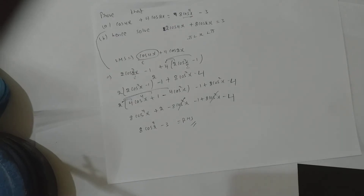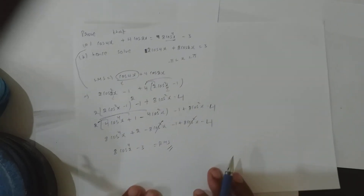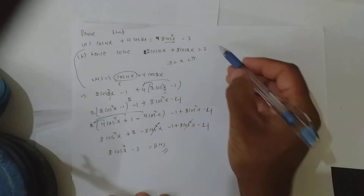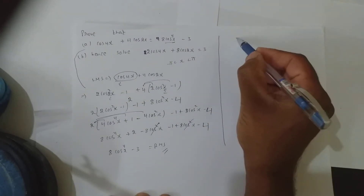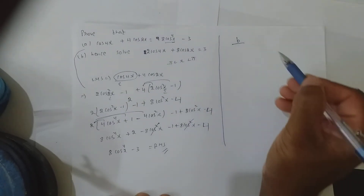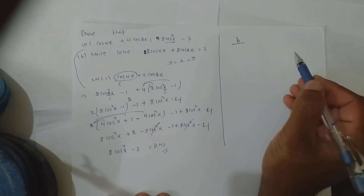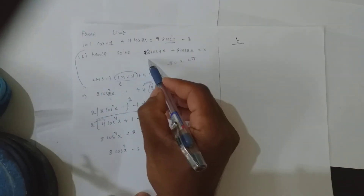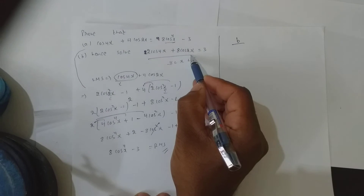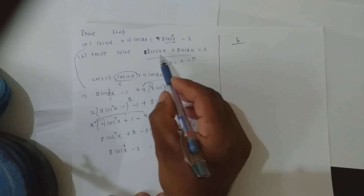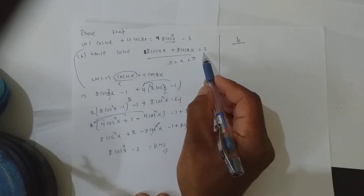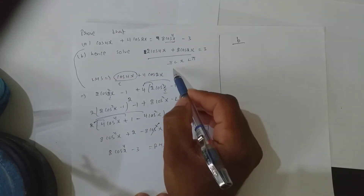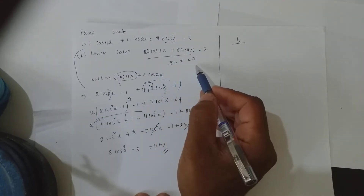I proved it. Now look at part b: 2cos 4x + 8cos 2x = 3, where x is between −π and +π.